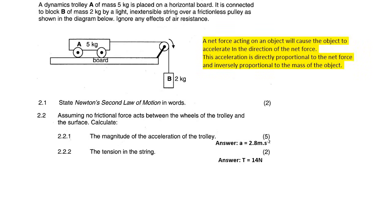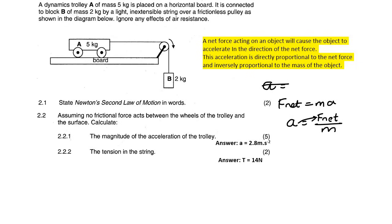There is the definition, highlighted in yellow. It's all based upon the formula F_net equals ma, and if you have to get a alone, it would be F_net over m. It says that a net force on an object will cause the object to accelerate. The acceleration is directly proportional to the net force, and inversely proportional to the mass.